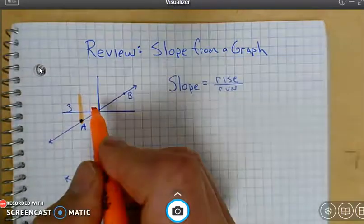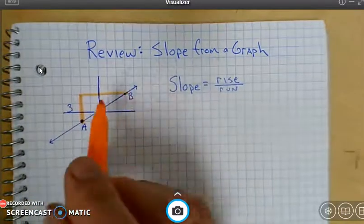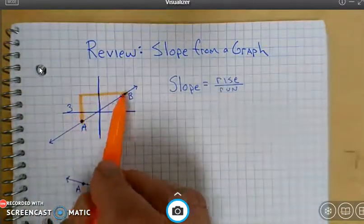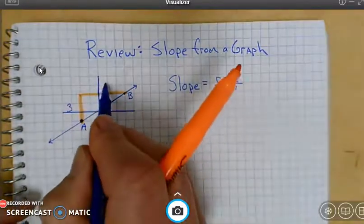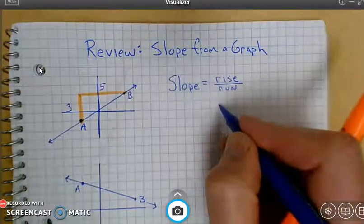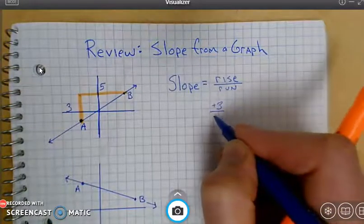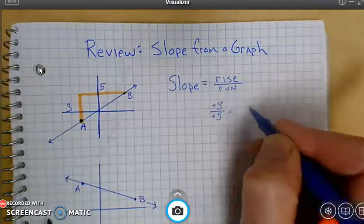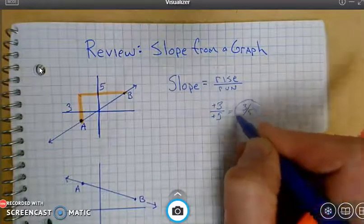And the run is going over 1, 2, 3, 4, 5, 5 units. So the ratio of the rise to the run is going to be rise 3, run 5, which is a slope of 3 fifths.